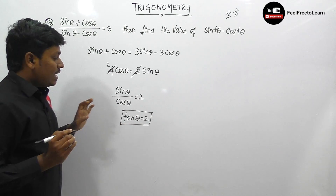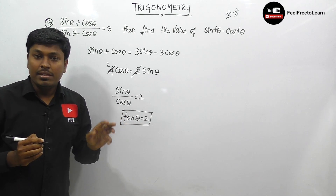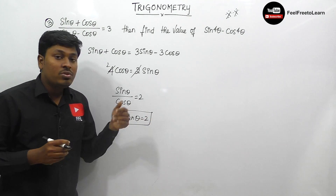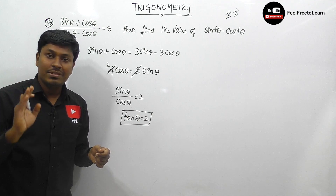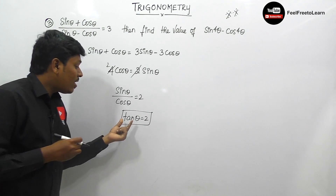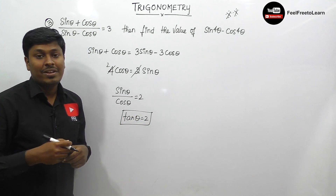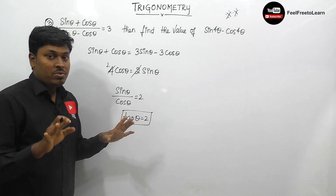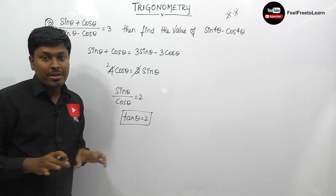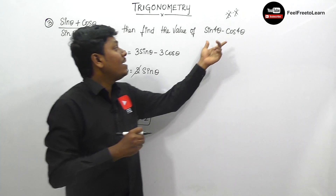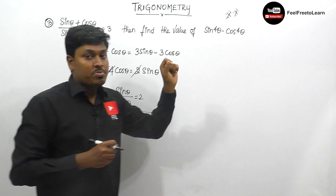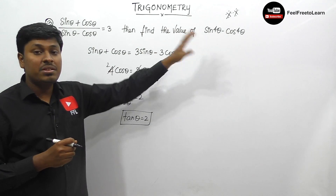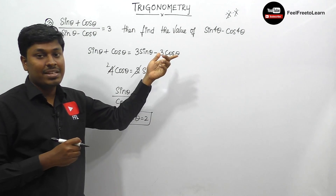If tan θ equals 1, θ would be 45°; if tan θ equals √3, θ would be 60°. But here tan θ equals 2, so we cannot directly find θ. Our target is to find sin⁴θ minus cos⁴θ. We need to convert the given expression entirely in terms of tan θ so that we can substitute tan θ equals 2.